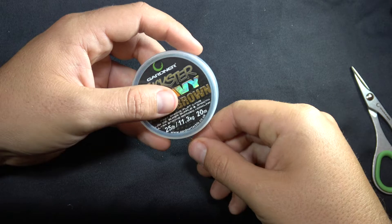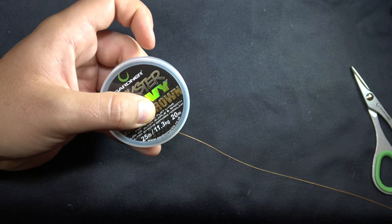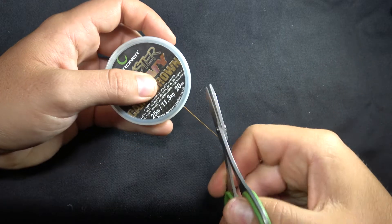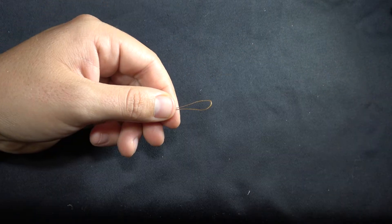The first step, take your Gardner trickster heavy camo brown 25 pound braid, pull off 25 centimeters of that and cut it. Then make a loop and tie a granny loop knot.